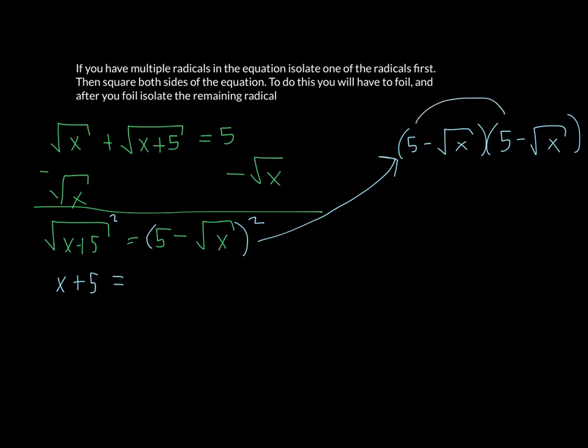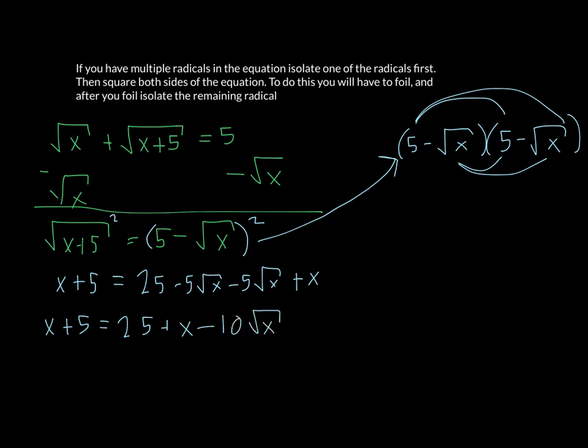So we've got first, outer, inner, and last. Negative square root of x times negative square root of x is plus x. So we kind of check and see what we have remaining. In this case, we'd have x plus 5 equals 25 plus x minus 10 square root of x. I'm just combining like terms.